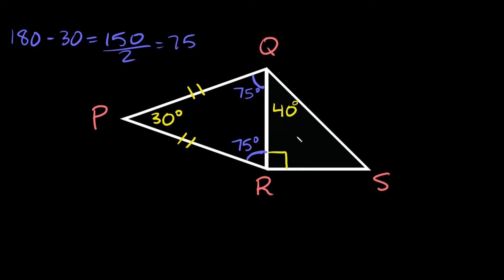Now in order to find this last missing angle, remember this is a right triangle so that means this guy is 90 degrees right here, and we already have 40 right here, so then this one must be 50 degrees.